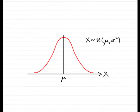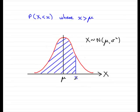Hi. Welcome to this tutorial on a normal distribution. In this tutorial, I want to show you how to work out the probability of being less than an observed value x, where x is greater than the mean mu.